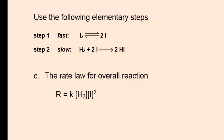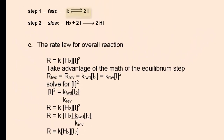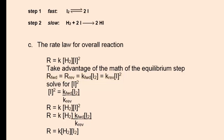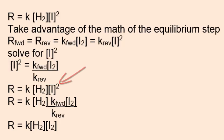Therefore, we need to utilize some math. We'll take advantage of the equilibrium step: the forward rate equals the reverse rate, so K_forward times [I2] equals K_reverse times [I]^2. Solving for [I]^2 gives K_forward over K_reverse times [I2]. We then substitute this expression for [I]^2 in our initial proposed rate law.